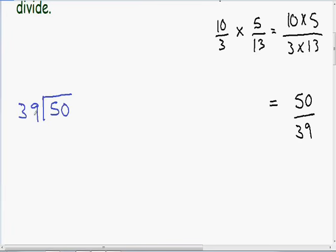I'm going to say 39 goes into 50 one time. 1 times 39 is 39. And if we subtract these two numbers, we have a remainder of 11.